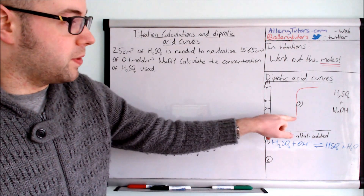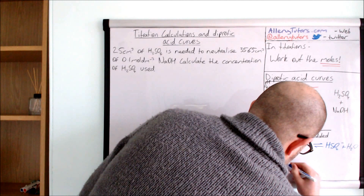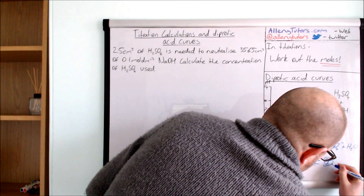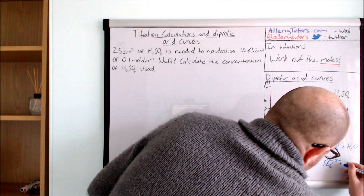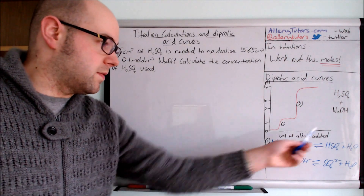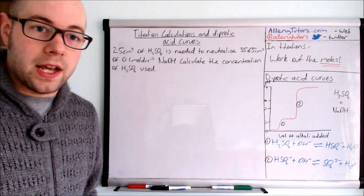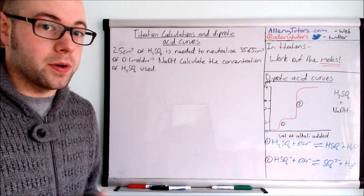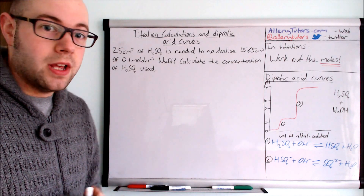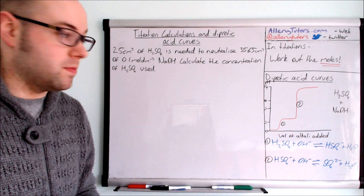The second equation for this step is: HSO₄⁻ reacting with OH⁻, in equilibrium, to produce SO₄²⁻ plus H₂O. So in this reaction, the HSO₄⁻ reacts with more hydroxide ions to form the sulfate ion SO₄²⁻ plus water. This is done in two stages. If they give you a diprotic acid curve and ask you to write equations for each endpoint, these are the type of equations you need to write.